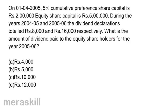On 1st April 2005, 5% cumulative preference share capital is Rs. 2,00,000 and equity share capital is Rs. 5,00,000. During the years 2004-2005 and 2005-2006, the dividend declarations totaled Rs. 8,000 and Rs. 16,000 respectively. What is the amount of dividend paid to equity shareholders for the year 2005-2006? A. 4,000  B. 5,000  C. 10,000  D. 12,000.